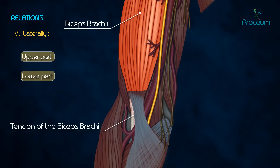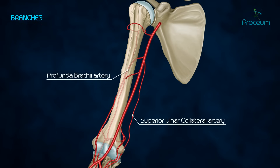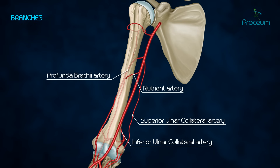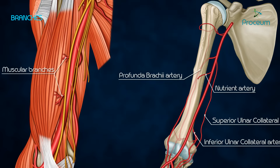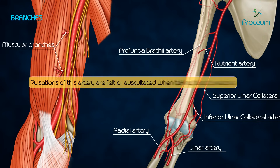In the lower part laterally, the tendon of the biceps brachii. Its branches are as follows: the profunda brachii artery, superior ulnar collateral artery, inferior ulnar collateral artery, nutrient artery to the humerus, muscular branches, and the radial and ulnar arteries are its terminal branches. A point to be noted: pulsations of this artery are felt or auscultated when taking blood pressure.